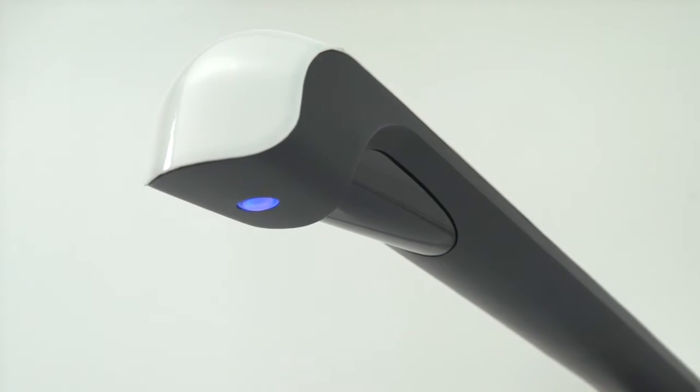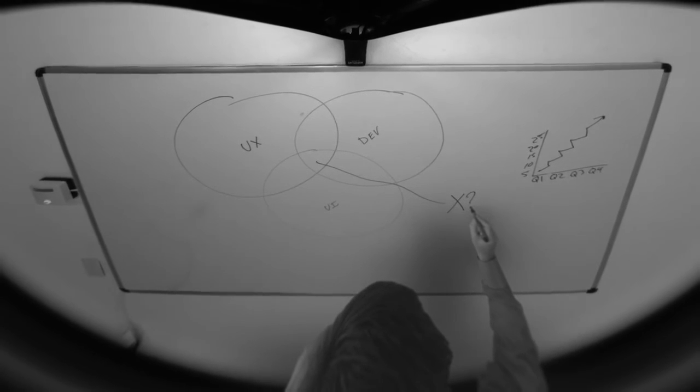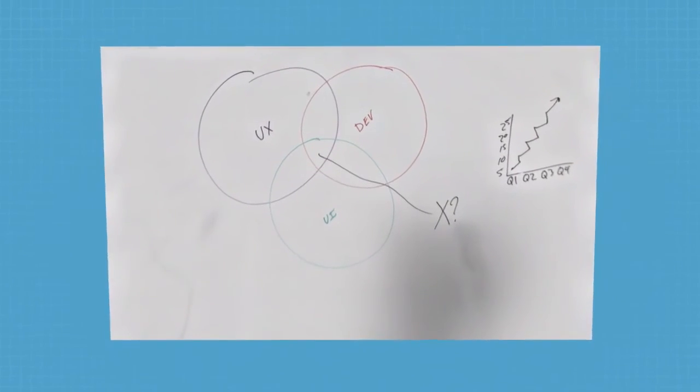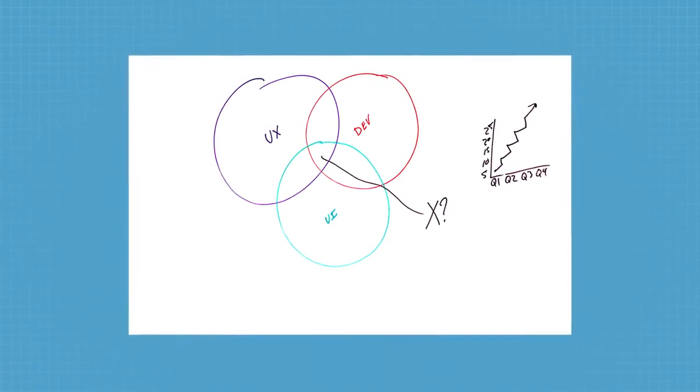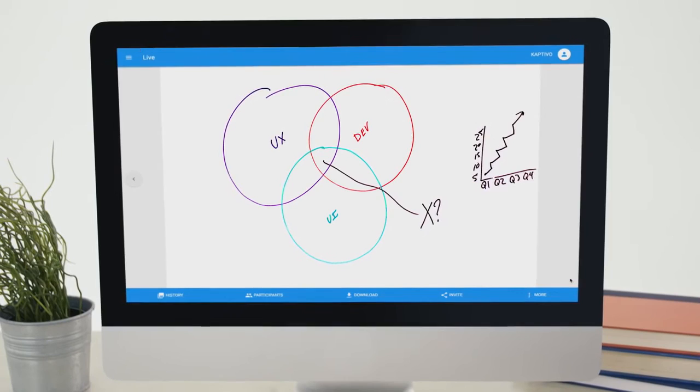Captivo's patented image processing technology transforms images perfectly, removing camera distortion, people in front of the board, even background objects, shadows, and reflections. Creating a perfect, clean, sharp, real-time image of the whiteboard.